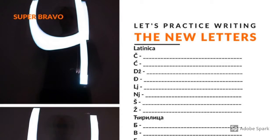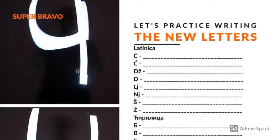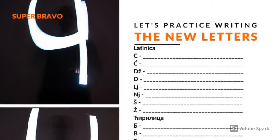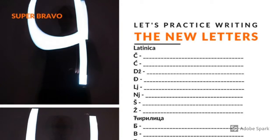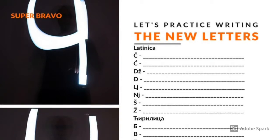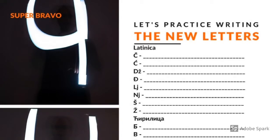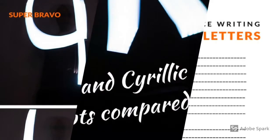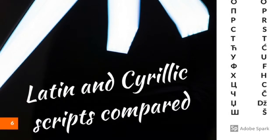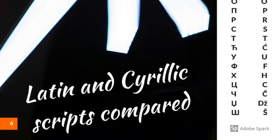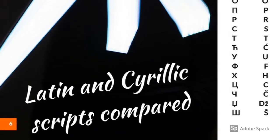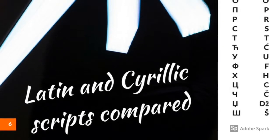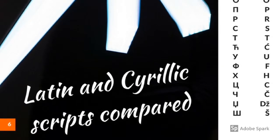Page 6 is there for you to practice writing the letters that are different from English. You can print out this page and continuously keep writing the letters you'd like, or all of them — why not? On page 6 you can also compare the Cyrillic and Latin letters one next to each other.